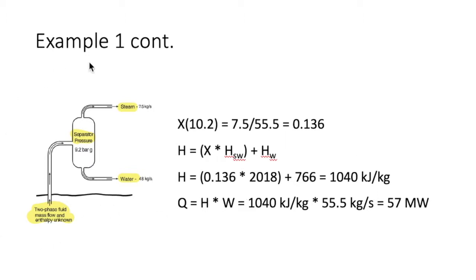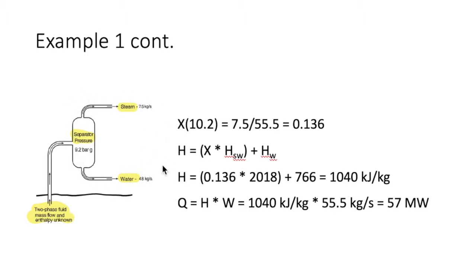Here is a diagram of a separator pressure setup. The two-phase fluid moves into the separator where a specific pressure exists, and the phases are divided into steam and water, each with their own separate flow rates.